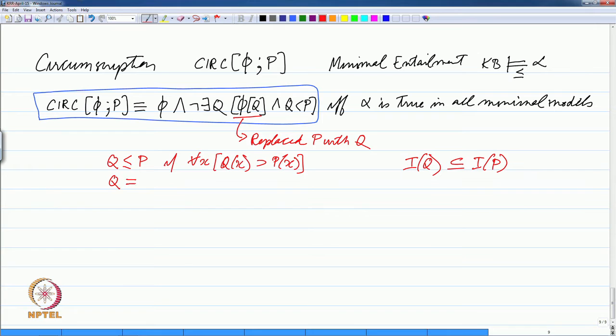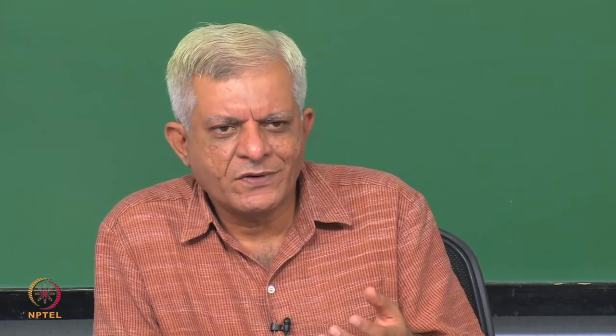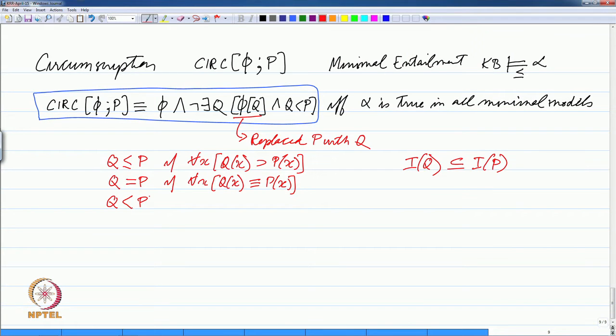We say that q is equal to p if for all x, q(x) is equivalent to p(x). Remember that equivalence is a both-way implication. The thing to observe is that on the left-hand side we are talking about predicate names, so we are not in first-order logic where you use equality for terms. Here we are talking of predicates, which are basically sets. And we can define q less than p if q is less than or equal to p and q is not equal to p.